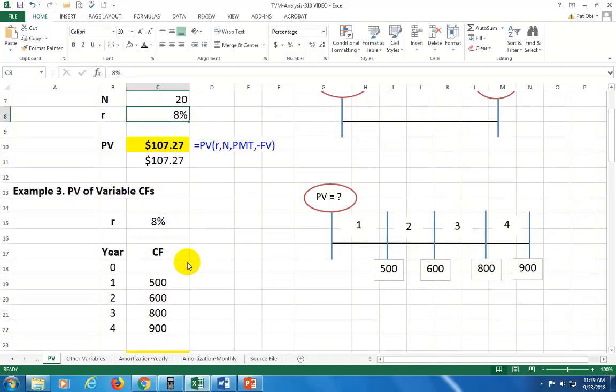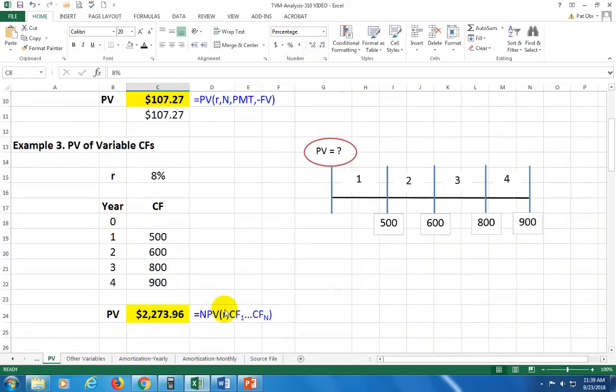So the second problem deals with variable cash flows. All right. And here, this is our input right there. And because we have variable cash flows, we're not going to use the simple PV function as up there. We're going to use the NPV function as I write out here.